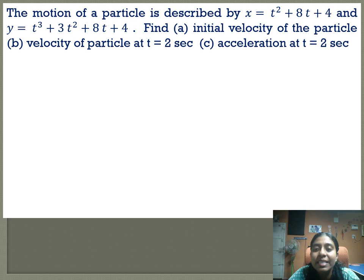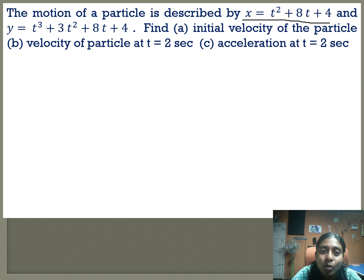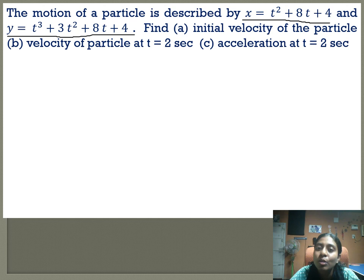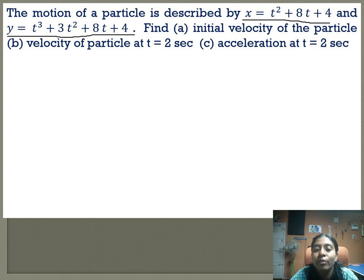Next problem: the motion of a particle is described by x = t² + 8t + 4 and y is also given as a function of time. We are required to find the initial velocity of the particle, the velocity at t = 2 seconds, and the acceleration at t = 2 seconds. For initial velocity, take t = 0 and find dx/dt = vx and dy/dt = vy, then velocity v = √(vx² + vy²).